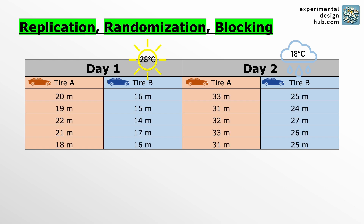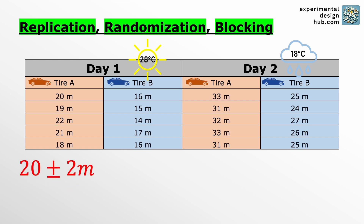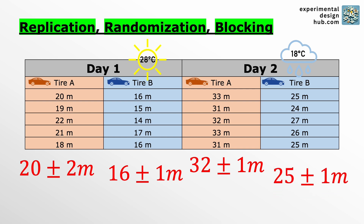That way she accounts for the day-to-day variability like weather, but still keeps things random within the day to handle any changes that happen during testing. This gives her a much more accurate comparison between the tires even with varying conditions.